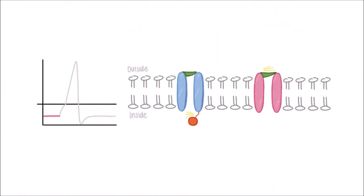After some time, the inactivation gates of sodium channels start to slowly open back up, while the potassium activation gates close. This allows the membrane potential to return to resting state, officially resetting both channels so that they are ready for the next action potential. The slow reopening of the sodium inactivation gates allows for the unidirectional movement of action potentials down a neuron, as they inactivate the sodium channels so that they wouldn't become depolarized again.